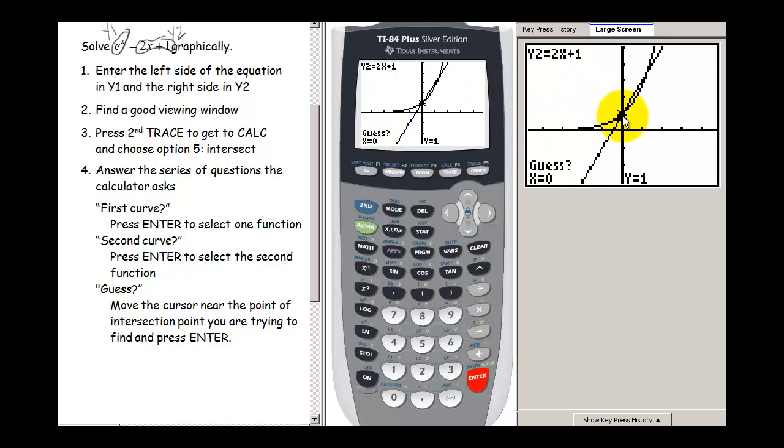And then I've got two intersection points here. So I need to make sure that my spider, my cursor, is near the intersection point that I want. So let's do this first one that looks like it's about at 0 and press enter here.